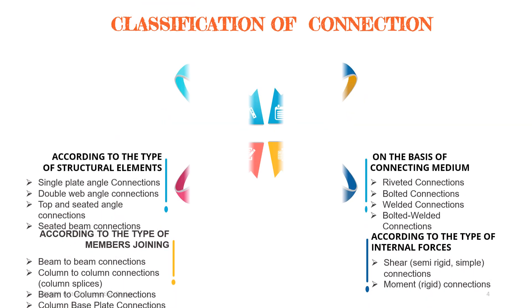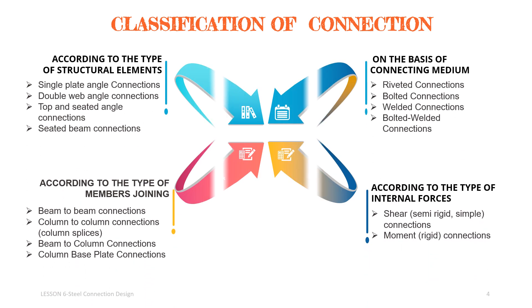There are four ways to classify the connection: first, on the basis of connecting medium; second, according to the type of internal forces; third, according to the type of structural elements; and finally, according to the type of members joining.